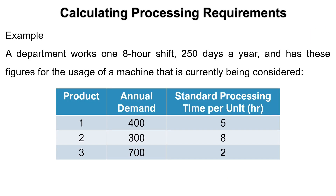Let us solve an example. A department works one 8-hour shift, 250 days a year, and has these figures for the usage of a machine that is currently being considered, as shown in this table.